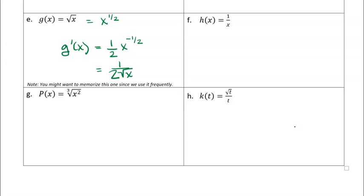I made a note that it could be helpful to memorize this one, but you don't have to, because we have the power rule — as long as you know that the square root is the 1/2 power, you can always reason it out. I personally try to memorize as little as possible with mathematics. That's the beauty of mathematics: it's all based on reason. So whenever I see a square root, I change it to x to the 1/2 and use the power rule on it.